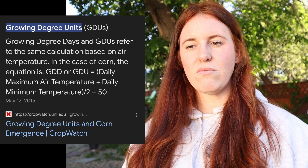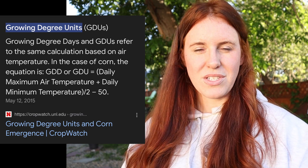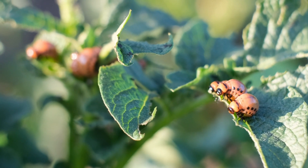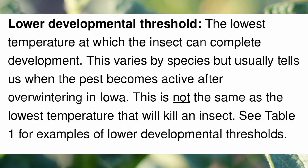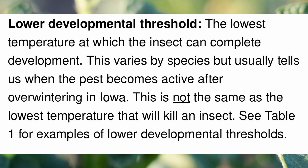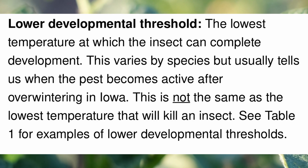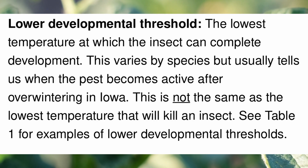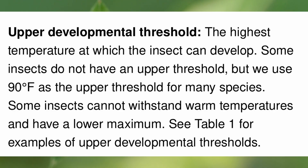Every pest has its own set of units before it's triggered, and every pest has a range — a bottom range and an upper range. If it dips below the bottom range, it's too cold for any reproduction or hatching to take place. If it goes above the upper range, it's too hot and that pest can't survive.